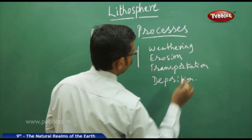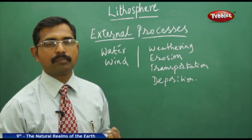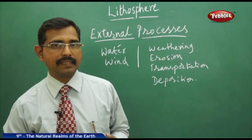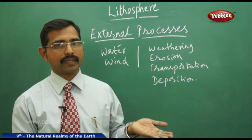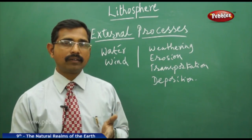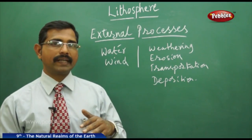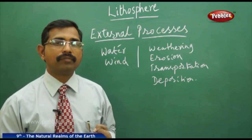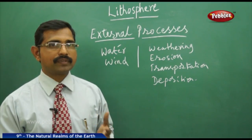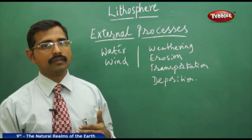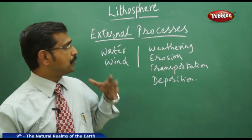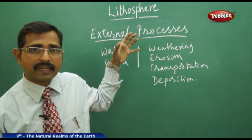As discussed earlier, first-order landforms are the oceans and continents. Second-order landforms on the surface of the continents include mountains, plains, and plateaus.